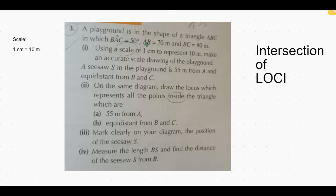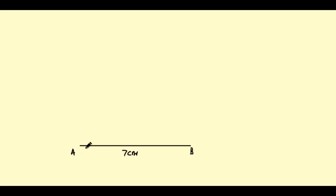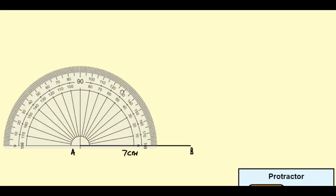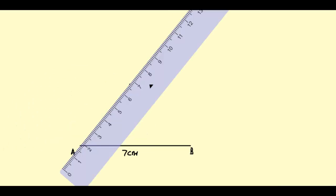Angle BAC is 50 degrees, so let's draw this angle first. The angle will be at point A and it will be 50 degrees. Put your protractor on the line AB and mark the angle 50. I will mark angle 50 here and then join point A to the mark representing 50 degrees.